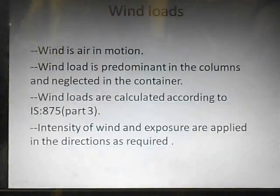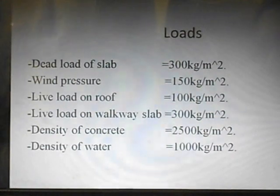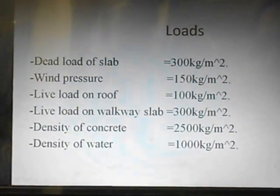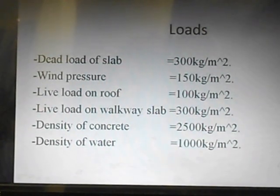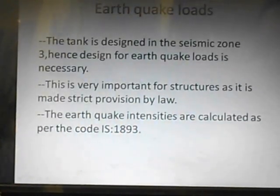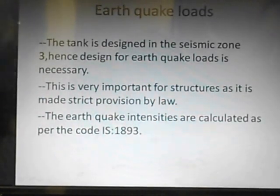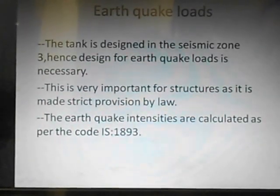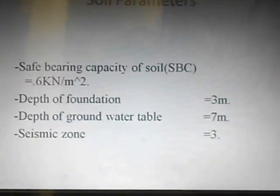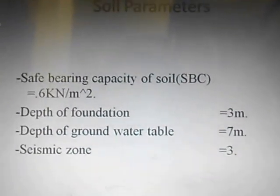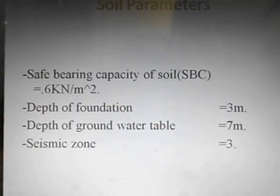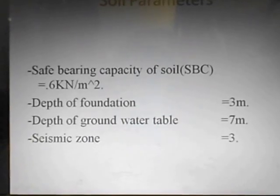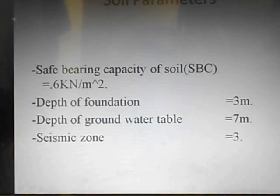Wind loads are designed according to IS 875 Part 3. The dead load of the slab is 300 kg per meter square, and the various loads can be seen in the slide. We are designing the tank in seismic zone 3, hence the design for earthquake load is necessary and very important. It is governed as per code IS 1893. For soil parameters, the bearing capacity of the soil is 0.6 kN per meter square, which is found to be very less; hence we use a raft foundation. The depth of foundation used is 3 meters and the depth of the groundwater table is 7 meters.